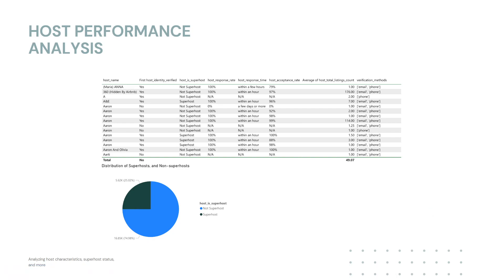Moving on to host performance analysis, I created a pie chart showing the percentage of superhost and not superhost in the dataset. By the help of this table, we can see the names of the hosts, whether the host is verified or not, whether the host is a superhost or not, what the response rate is like, what the response time is like, what the acceptance rate is like, the number of listings they have, and finally verification methods, which is the most important one here.